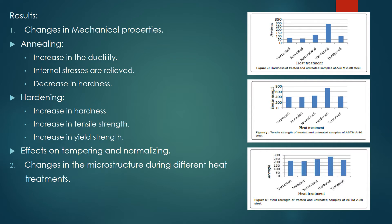The normalizing process doesn't show much change in ductility but it increases the hardness of the material. Whereas the tempering process provides toughness to the material, but that comes at the cost of hardness.